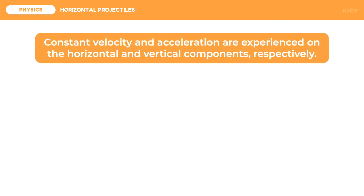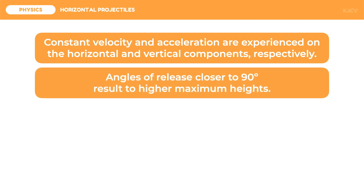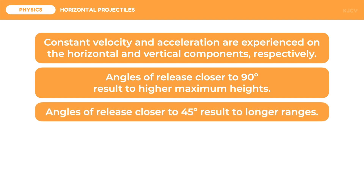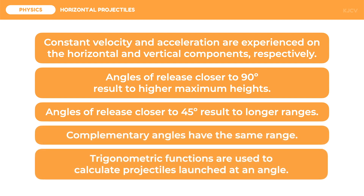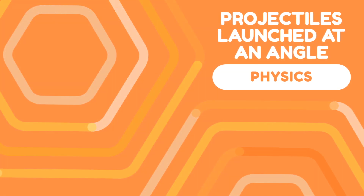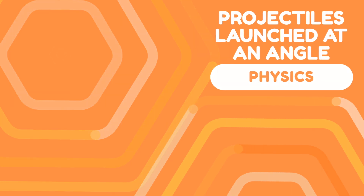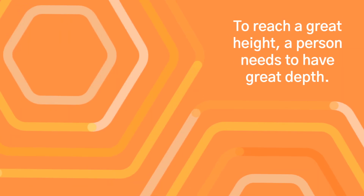To summarize this lesson, let us review the following key points: Constant velocity and acceleration are experienced on the horizontal and vertical components respectively. Angles of release closer to 90 degrees result in higher maximum heights. Angles of release closer to 45 degrees result in longer ranges. Complementary angles have the same range. And lastly, trigonometric functions are used to calculate projectiles launched at an angle. And that ends our discussion on projectiles launched at an angle.